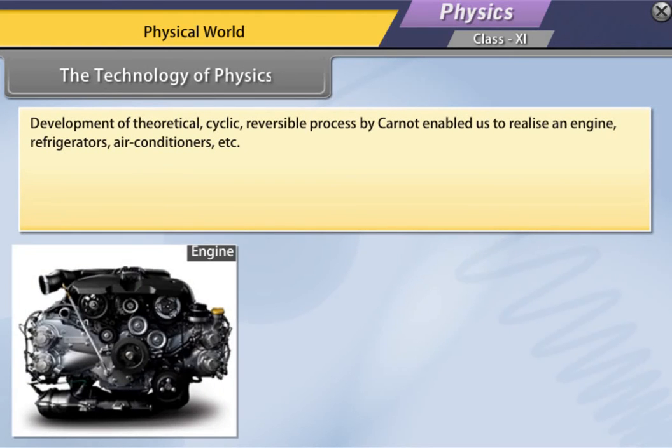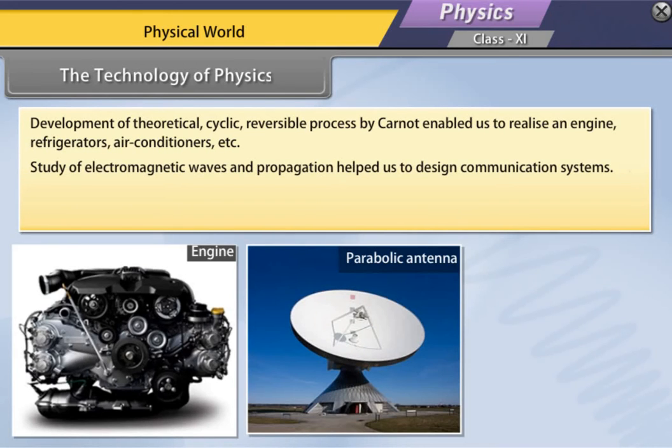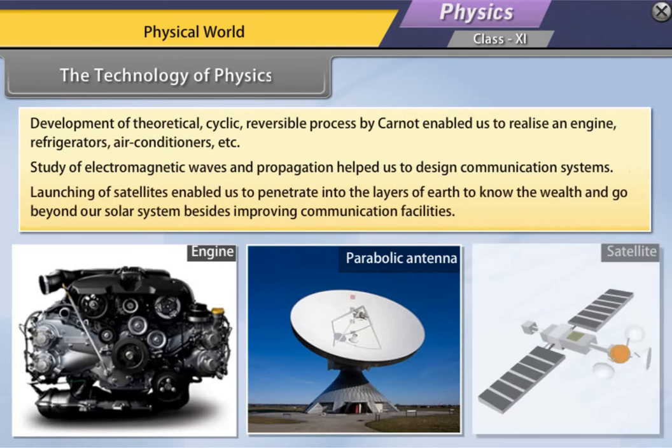Development of theoretical cyclic reversible process by Carnot enabled us to realize an engine, refrigerators, air conditioners, etc. Study of electromagnetic waves and propagation helped us to design communication system. Launching of satellites enabled us to penetrate into the layers of earth to know the wealth and go beyond our solar system besides improving communication facilities.